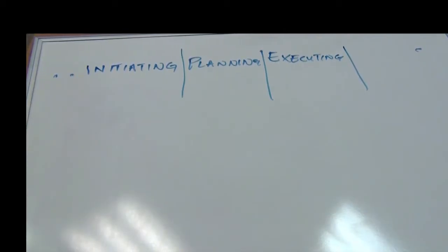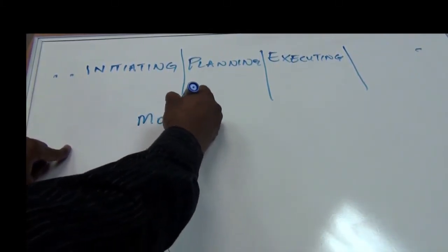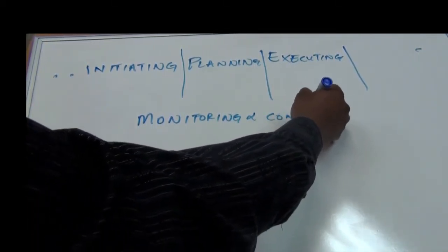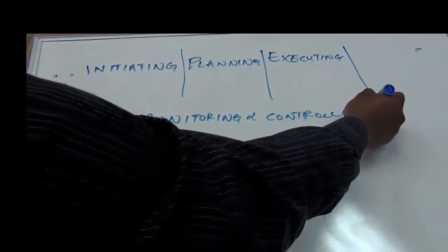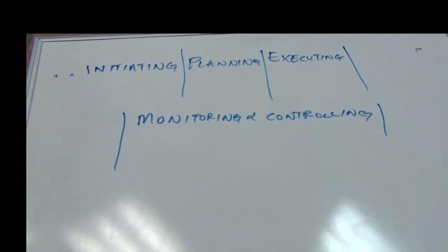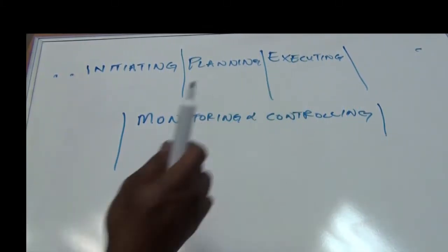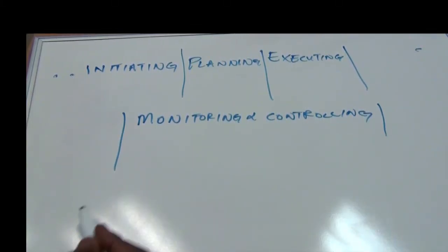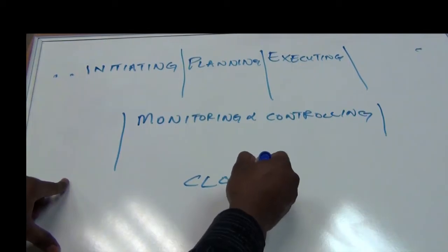Executing is all about carrying out that project management plan. The next group of processes is monitoring and controlling. This is all about monitoring the project, and if the project is going off, then taking action — which we refer to as controlling the project. And then the final group of processes is called closing.